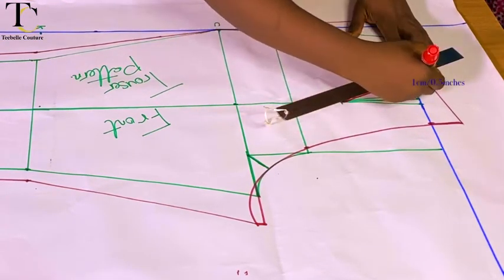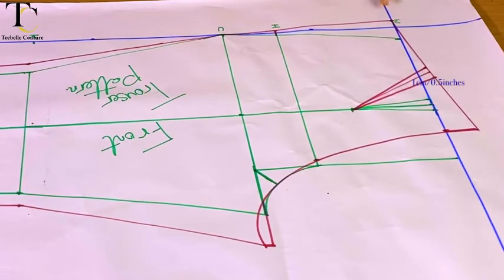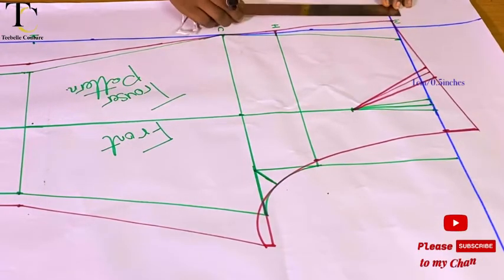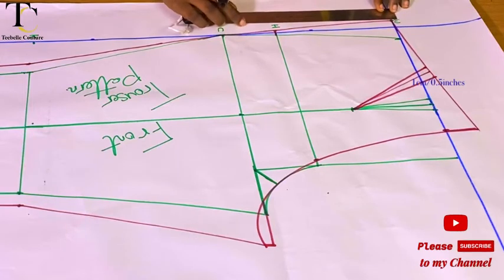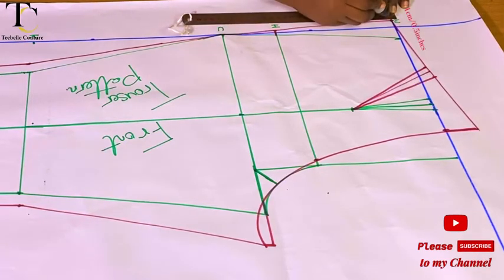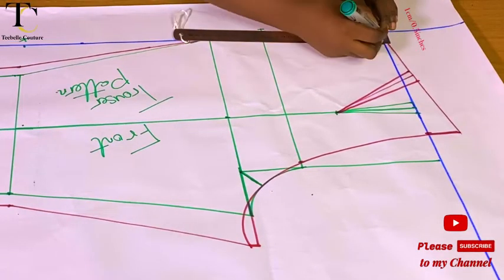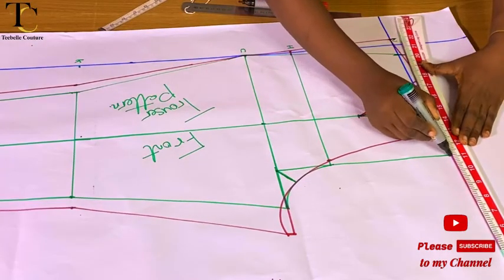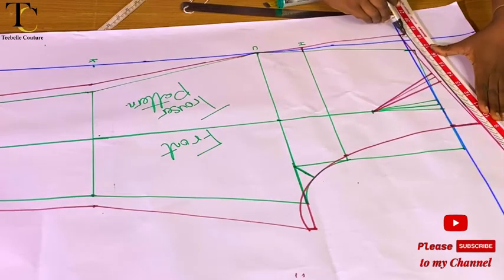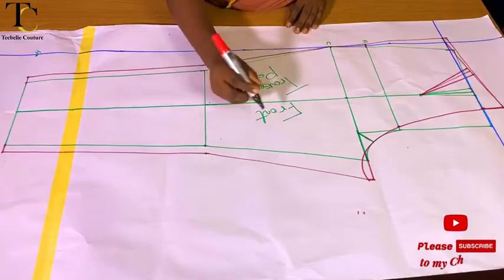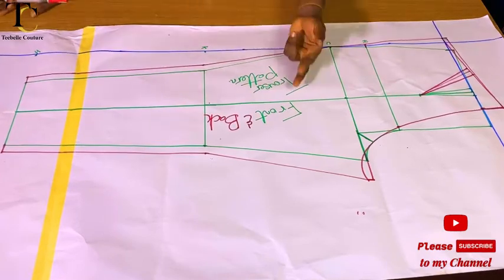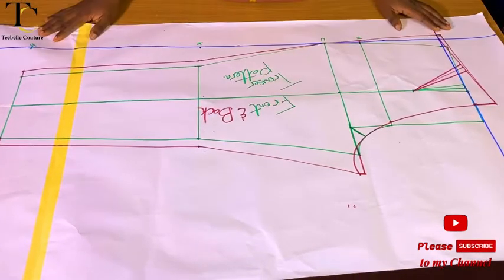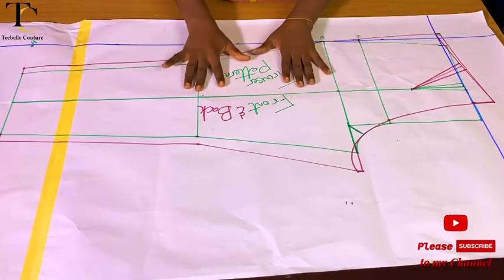At the very side of my waist I'm going to come up by one centimeter each for the front and one centimeter for the back — if you are using inches you can come up by 0.5 inches — and connect back to the other side of your waistline. To differentiate my front from my back, I wrote the front in green and the back in red. My back trouser is completely drafted.